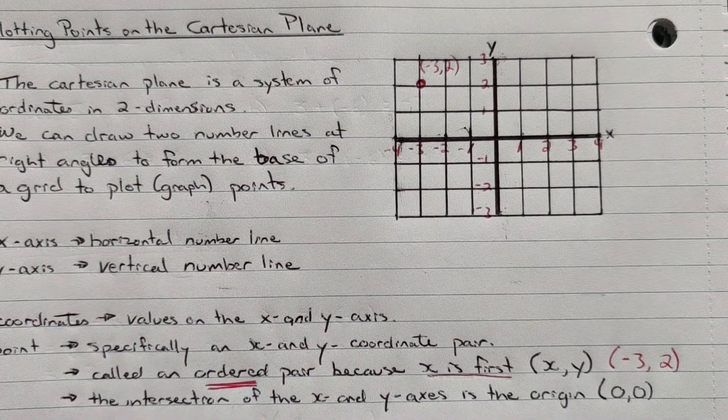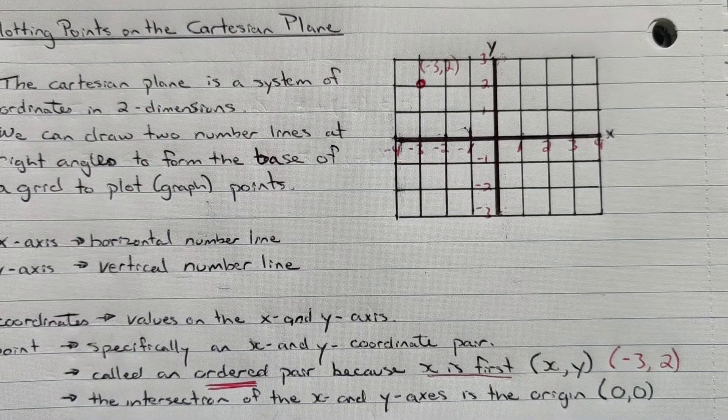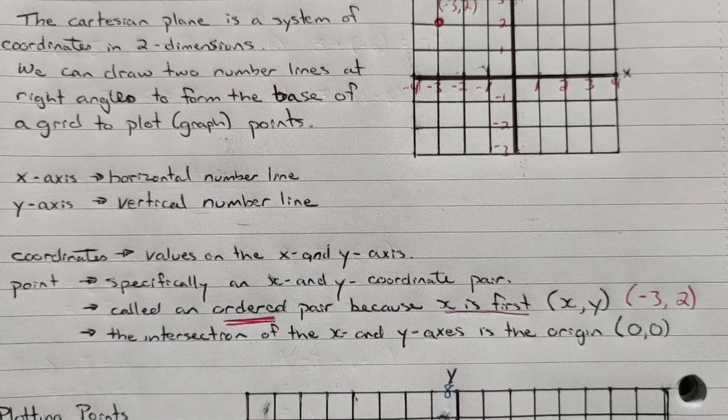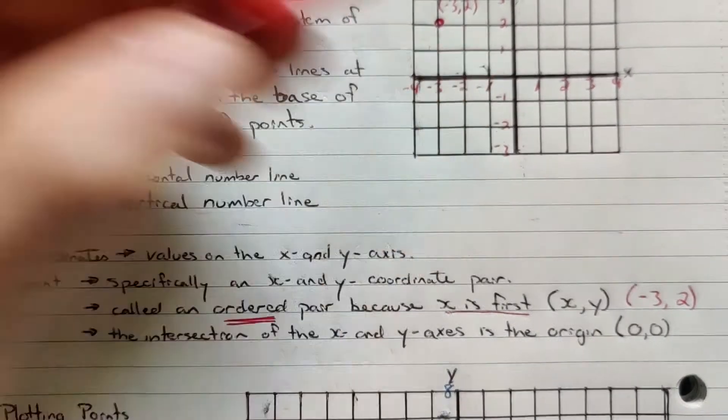The intersection of the x and y axis, this point right here, is zero, zero. That is actually known as the origin. So that is the origin point. So if someone refers to the origin, then they're talking about the initial value of zero, zero.